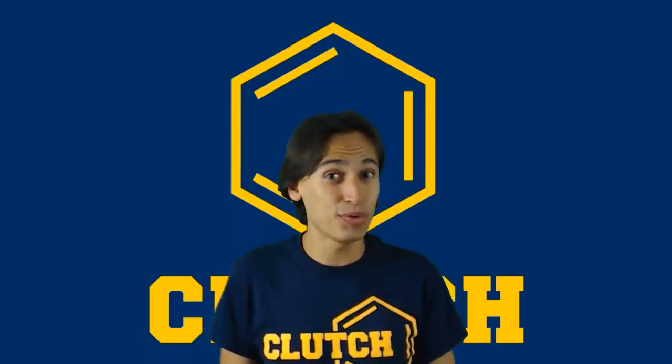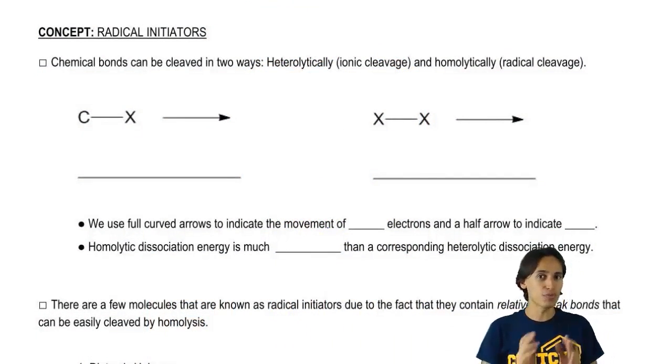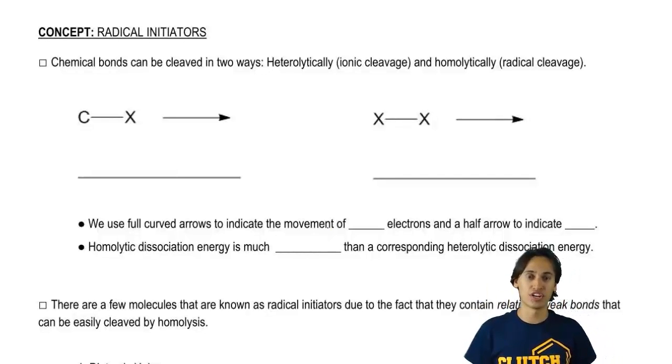So when we're dealing with reactions with radicals, the first thing we need to ask is how do we even get these radicals in the first place? That brings us to radical initiators. Every radical reaction that we talk about is always going to start off with a radical initiator.